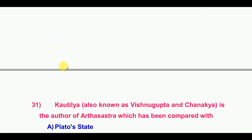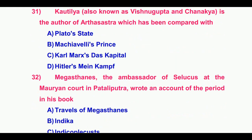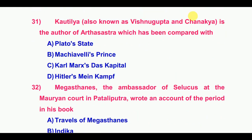Thirty-first question: Kautilya is the author of the Arthashastra, which has been compared with — the answer is Machiavelli's 'The Prince.'